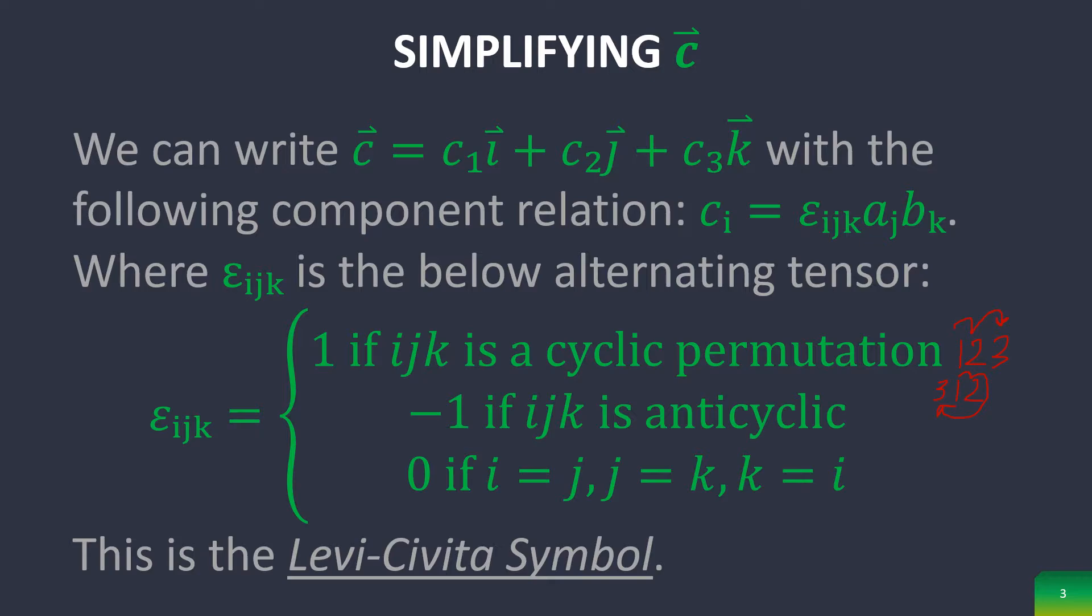However, now when we get to the part that says negative, it's negative one if it's anti-cyclic. Then if we had three, two, one, well, then it goes one, two, three, or one, three, two, which is not in the order of one, two, three, and so it's anti-cyclic.